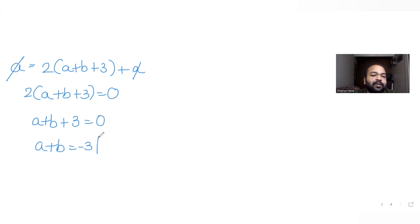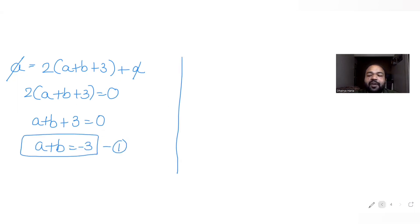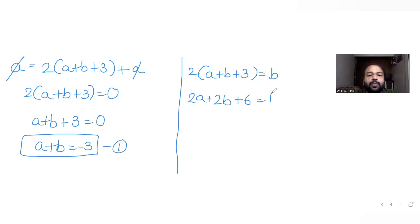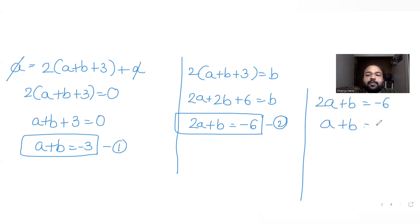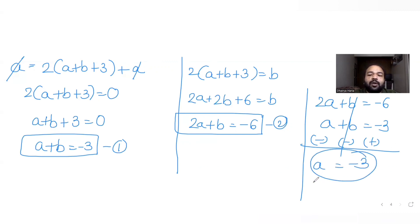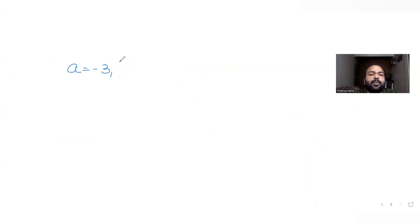From the second equation: 2(a + b + 3) = b, which gives 2a + 2b + 6 = b, so 2a + b = −6. That's the second equation. Solving simultaneously: subtracting (a + b = −3) from (2a + b = −6) gives a = −3. Substituting back: b = −3 − (−3) = 0. So a = −3 and b = 0.